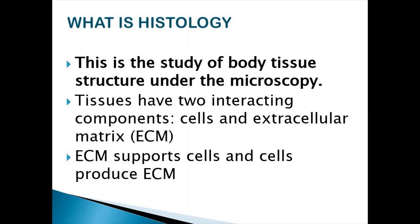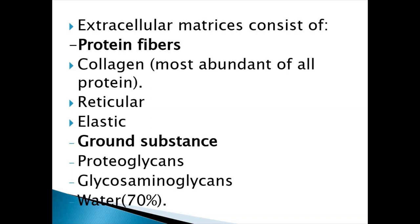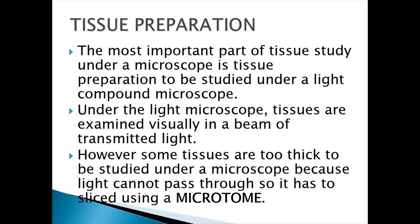Extracellular matrix is composed of protein fibers. There are three types: collagen fibers, which are the most abundant protein fibers in your body; reticular fibers; and elastic fibers. Extracellular matrix also contains ground substance, which contains about 70 percent water, proteoglycans, and glycosaminoglycans, also known as GAGs.